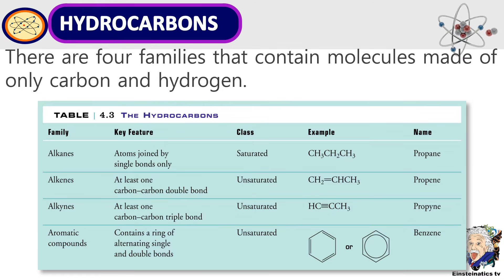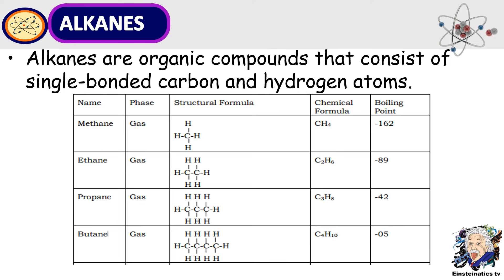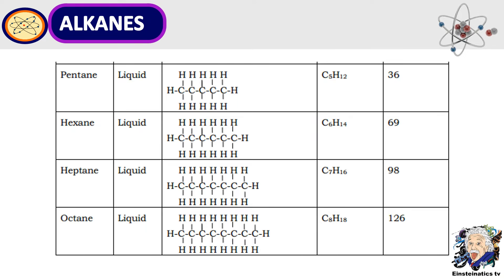Now let's proceed to the first example of hydrocarbons known as alkanes. Now it is quite easy to identify that it is an example of alkanes because as you can see, the carbon and hydrogen atoms are connected by a single bond. So single bond lang yung nagko-connect between hydrogen and carbon. When that happens, it is known as alkanes. Here are other examples of alkanes known as pentane, hexane, heptane, and octane.